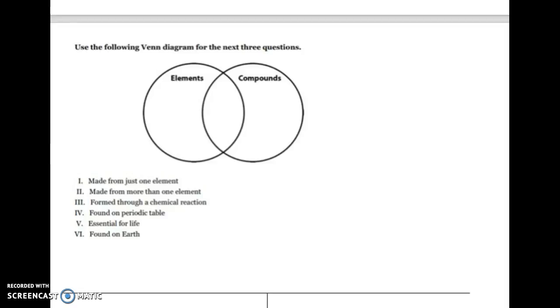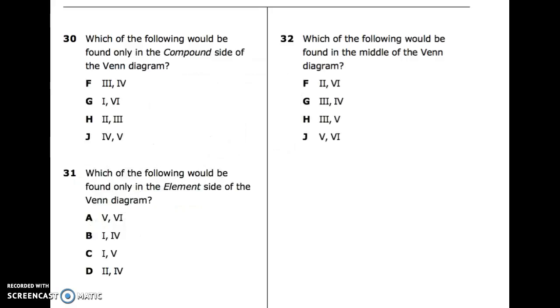Use the following Venn diagram for the next three questions. Elements and compounds. In the middle, what do they share that are the same? 1. Made from just one element. 2. Made from more than one element. 3. Formed through a chemical reaction. 4. Found on periodic table. 5. Essential for life. 6. Found on earth. Number 30: Which of the following would be found only in the compound side of the Venn diagram? 31: Which would be found only in the element side? 32: Which would be found in the middle of the Venn diagram?